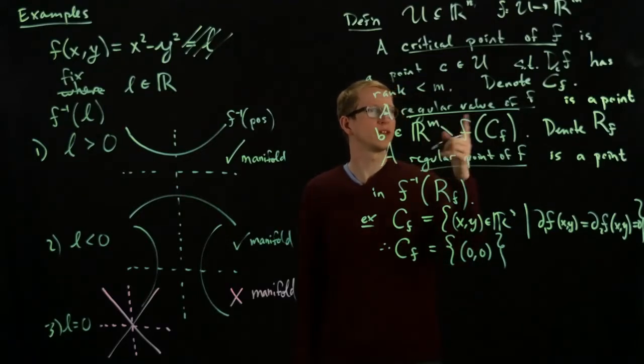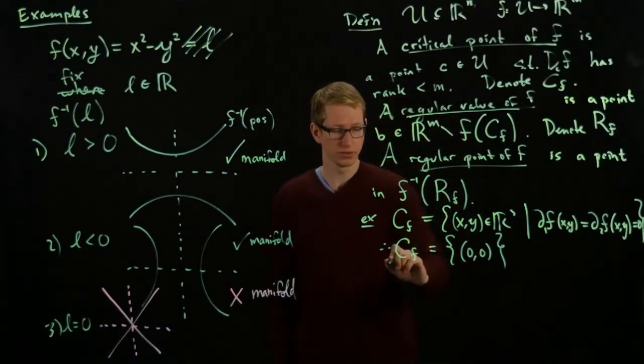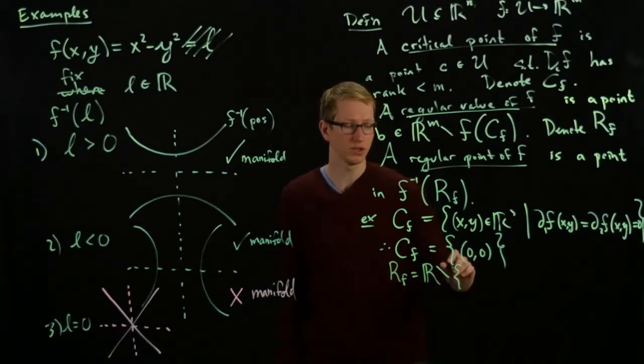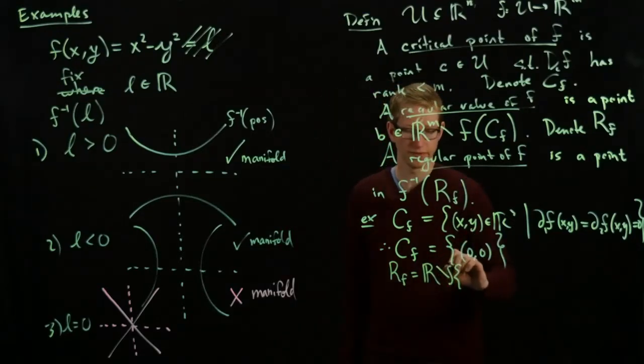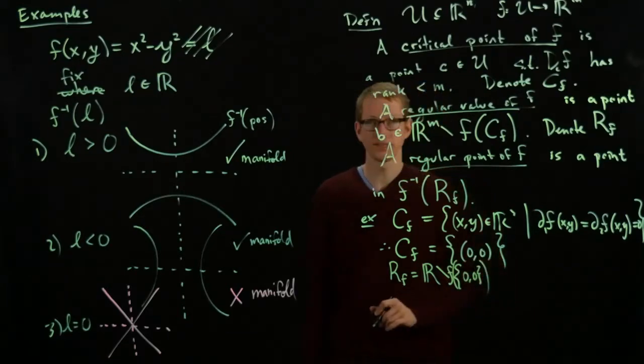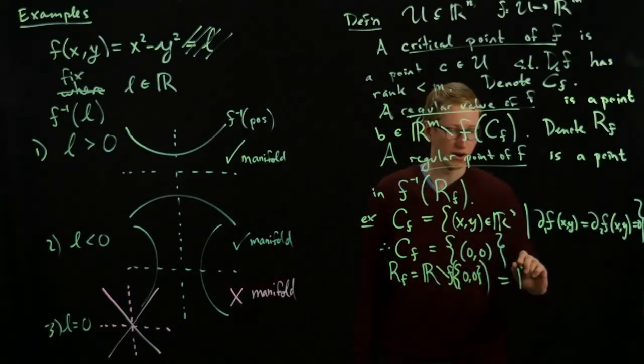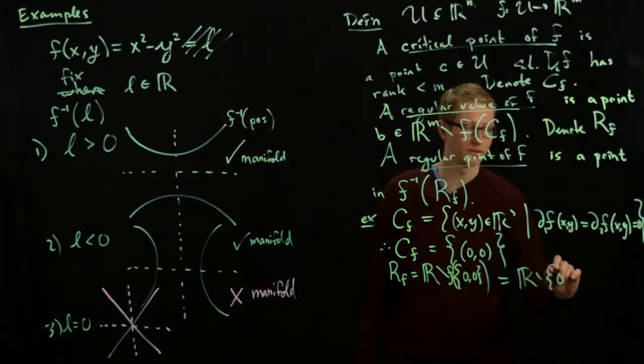Now, let's look at the regular values of f. So the regular values of f is defined to be, here m equals 1, and it's this minus the image of 0. It's f of this, right? Of 0, 0. But what's f of 0, 0? That's just 0. So this is just r minus the point 0. So the set of regular values is the entire real line except the point 0. Now we can sort of see what I meant by saying most points.